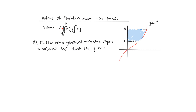Example: Find the volume when the shaded region is rotated 360 degrees about the y-axis. The curve is y = x³, so making x the subject gives x = y^(1/3). The function in y is y^(1/3).